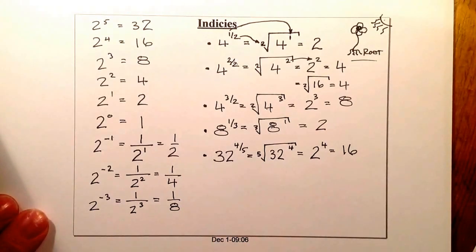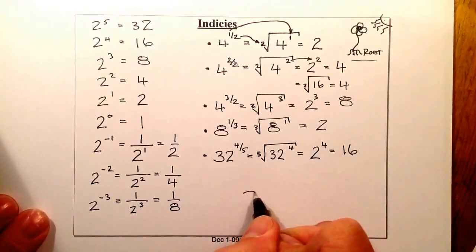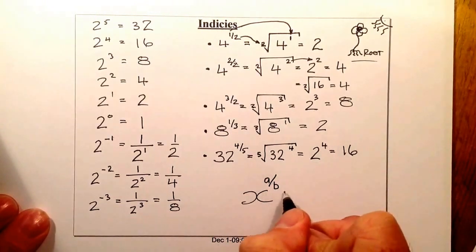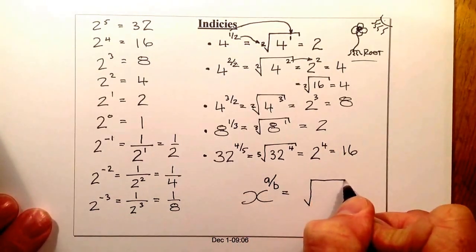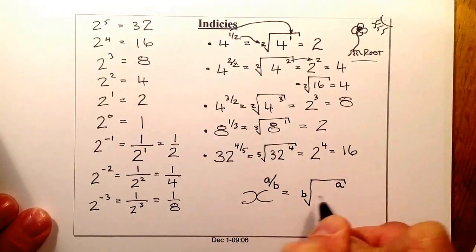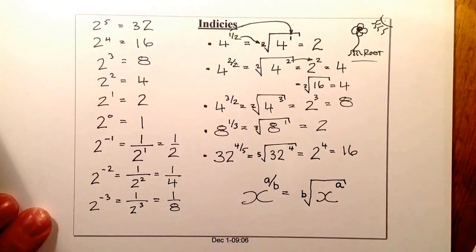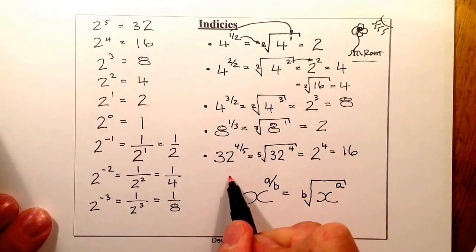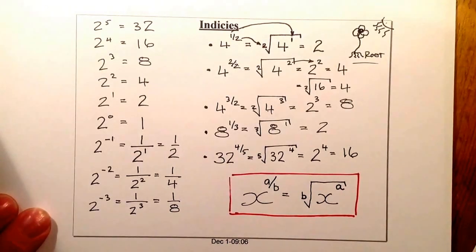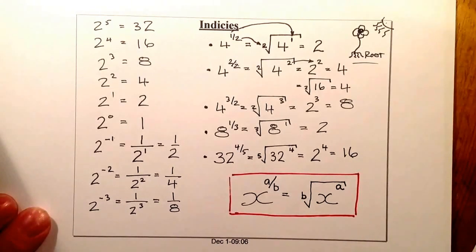The general rule is: if you have x to the power of a over b, that converts to a root sign where b goes as the root, a goes up as the power, and x goes inside. This is a key rule for indices. You can also go the other direction — converting from a root into index form. Hopefully this has helped with indices, numbers, and changing fractional indices into roots.